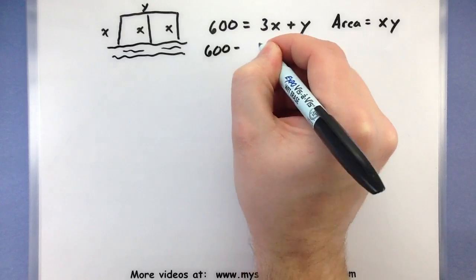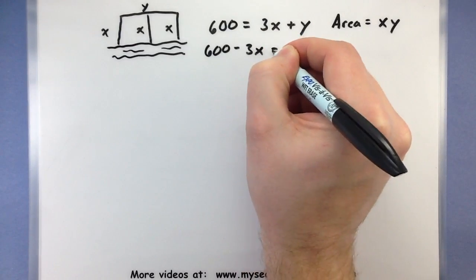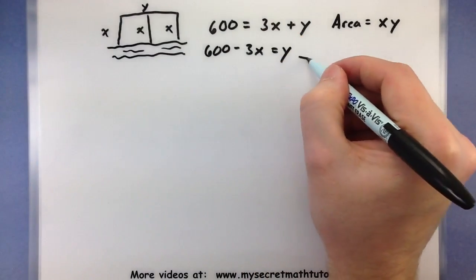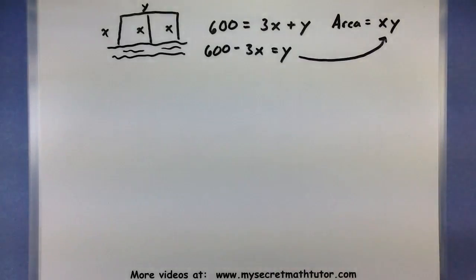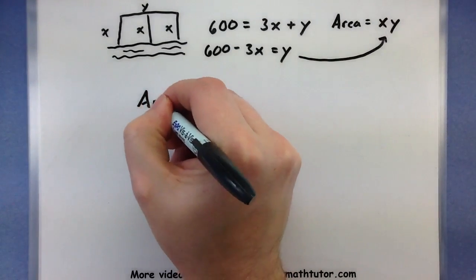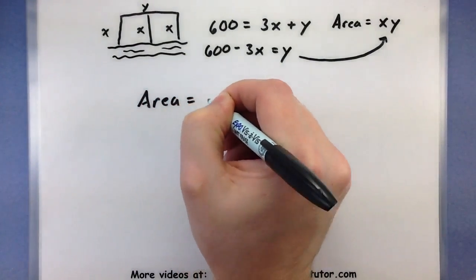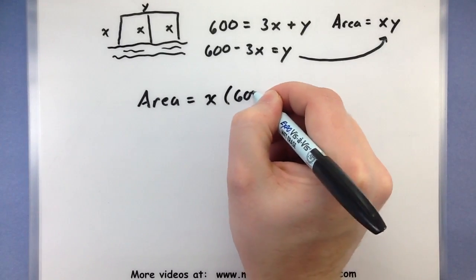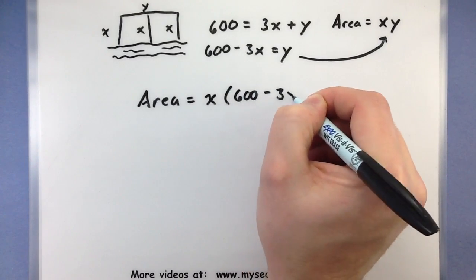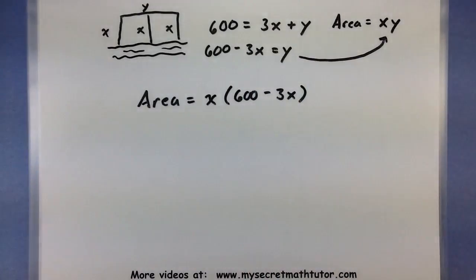So 600 minus 3x is equal to y. We'll go ahead and put it right in there for y. So area is equal to x multiplied by 600 minus 3x. There we go.